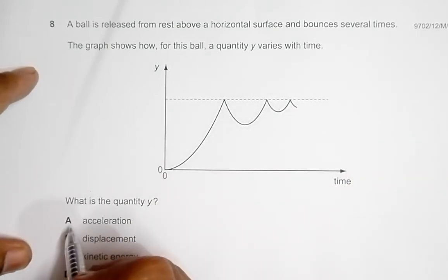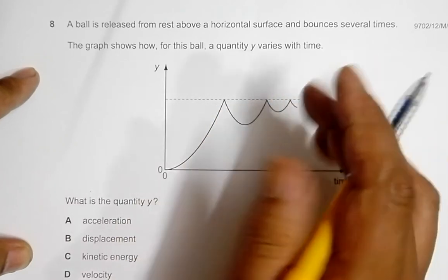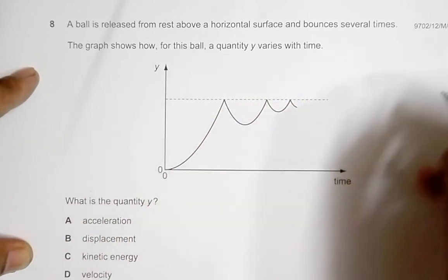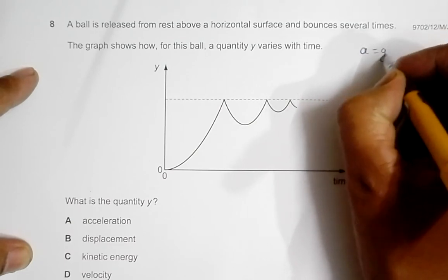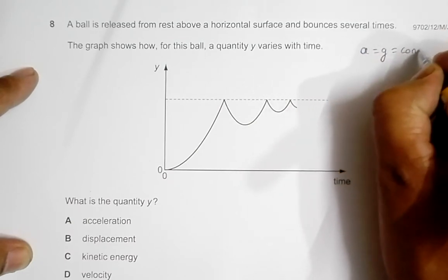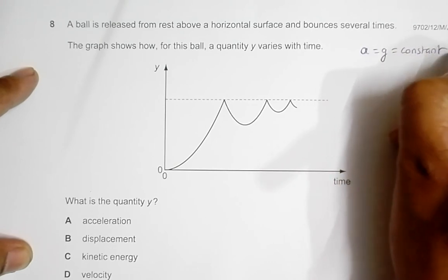Let's first go to choice number A. When a body falls, the value of a, the acceleration, is equal to G and that should be equal to constant. So as the graph varies here, this cannot be the choice.